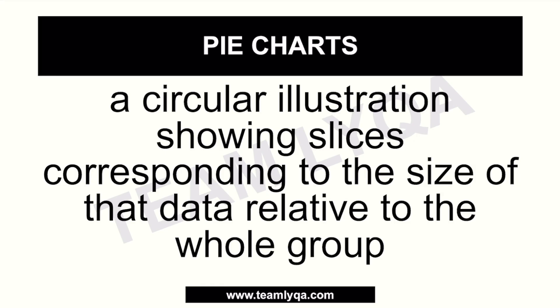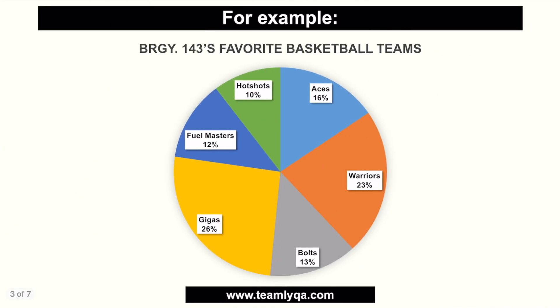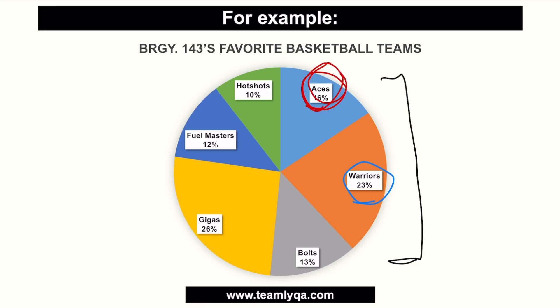What does that mean? If you have a pie chart like this one, it's divided into different parts or slices with meaning. For example, ACES represents 16% of the entire population surveyed — meaning 16% out of 100% of respondents chose ACES as their team. Similarly, Warriors got 23% out of 100, and so on.